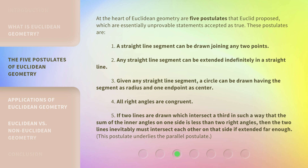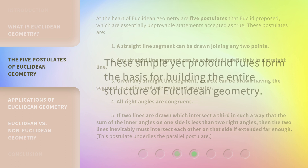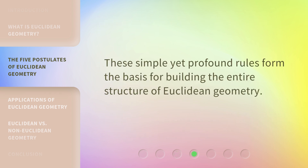5. If two lines are drawn which intersect a third in such a way that the sum of the inner angles on one side is less than two right angles, then the two lines inevitably must intersect each other on that side if extended far enough. This postulate underlies the parallel postulate. These simple yet profound rules form the basis for building the entire structure of Euclidean geometry.